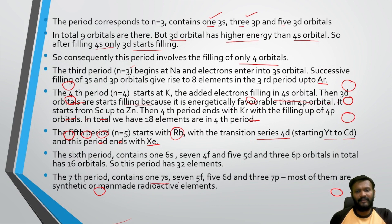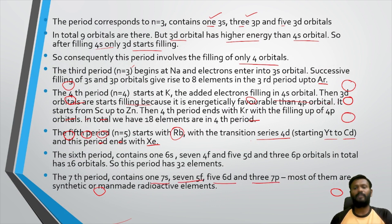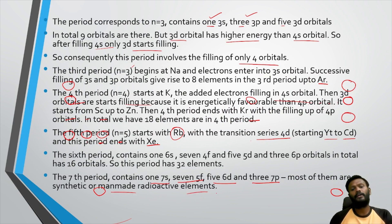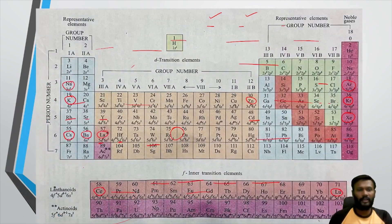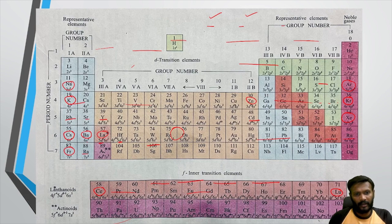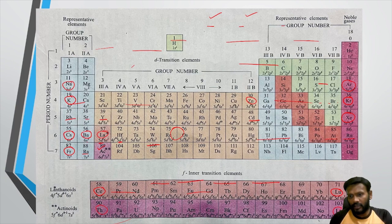The 7th period contains 7s, 5f, 6d, and 7p orbitals. Most of the elements in this period are synthetic or man-made radioactive elements. There are 32 elements filled in this period as well, ending with Oganesson (previously referred to as Lawrencium in older nomenclature).